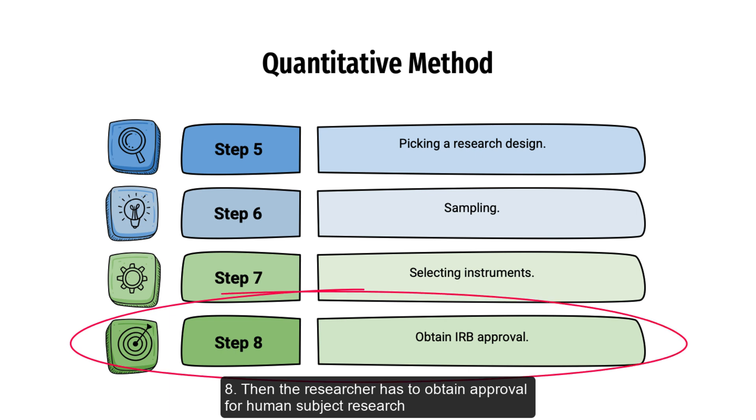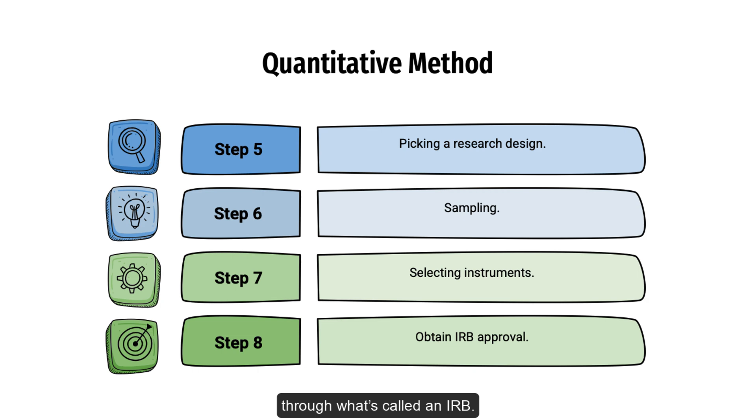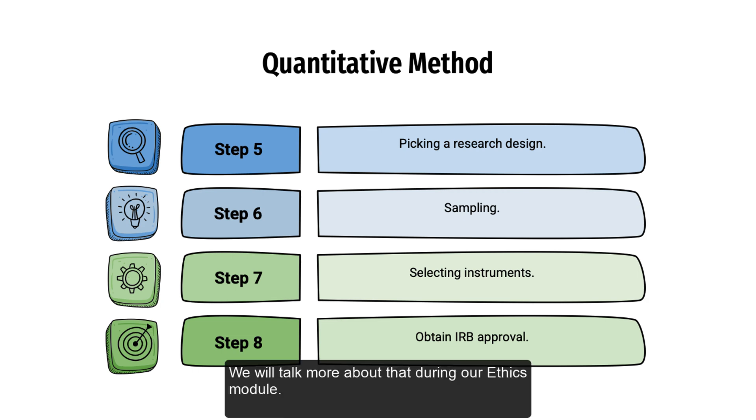Step 8: Then the researcher has to obtain approval for human subject research through what's called an IRB. We'll talk about more of that when we work during our ethics module.